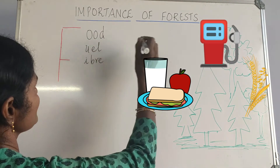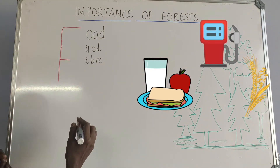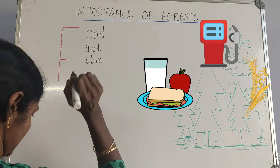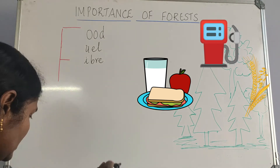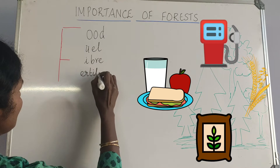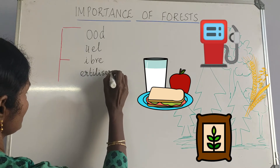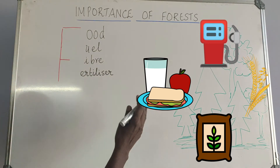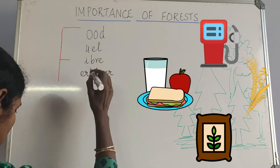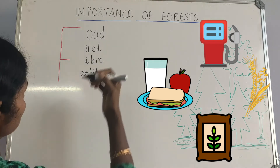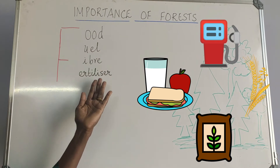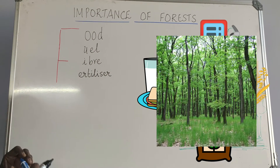All these come from the same word: forest. It also provides fertilizers, which means the natural bio-manure that we get. So fuel, fiber, food, and fertilizers — these are the important things we get from forests, these are the forest products.